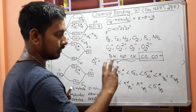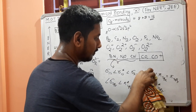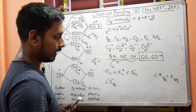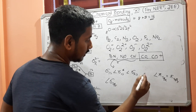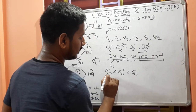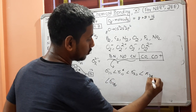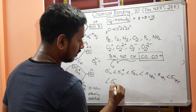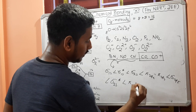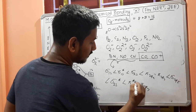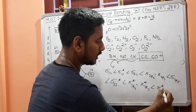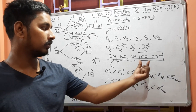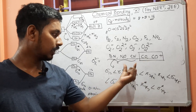For CO and CO⁺ specifically, there is a special consideration: the σ2s* orbital has higher energy than π2px, π2py, and σ2pz orbitals. So the order becomes: σ1s, σ1s*, σ2s, π2px = π2py, σ2pz, σ2s*, π*2px = π*2py, σ*2pz. This special ordering applies only to CO and CO⁺.